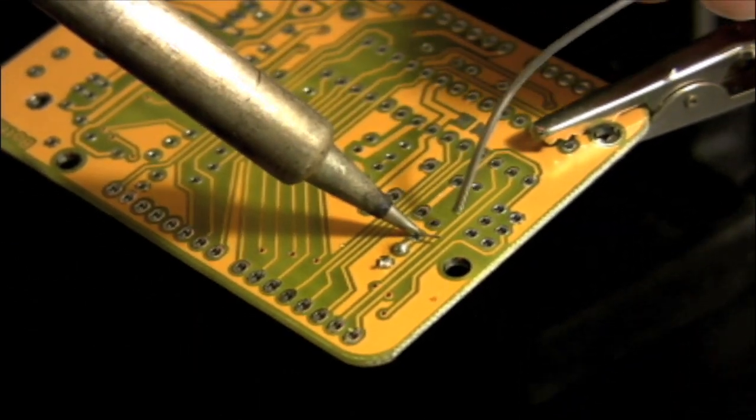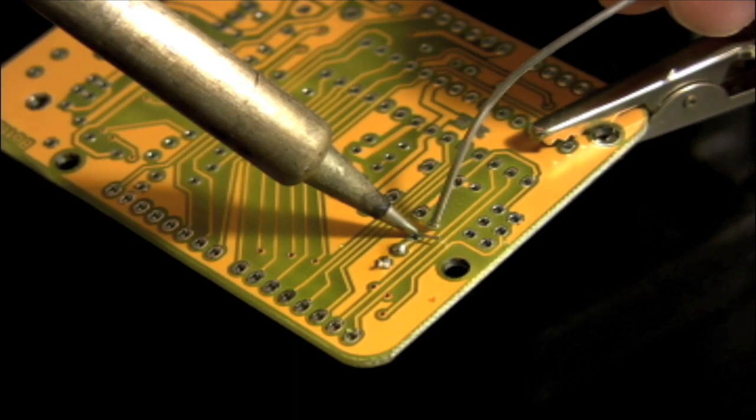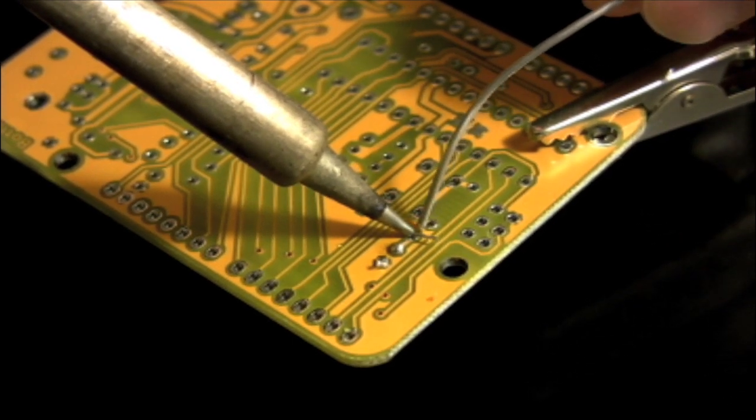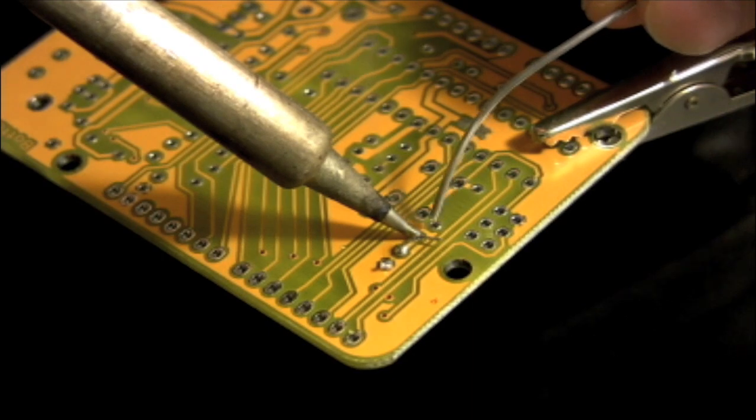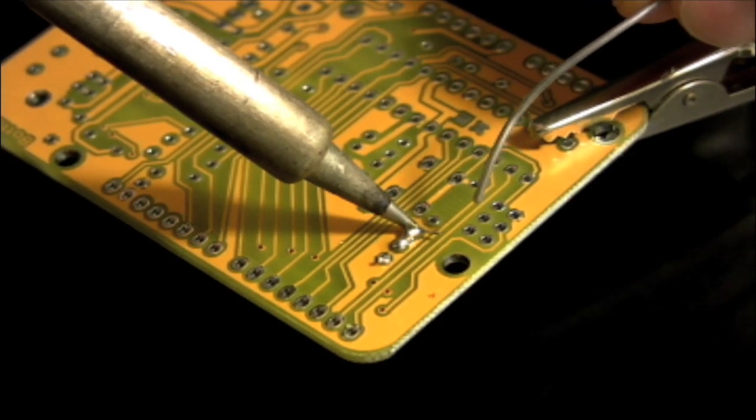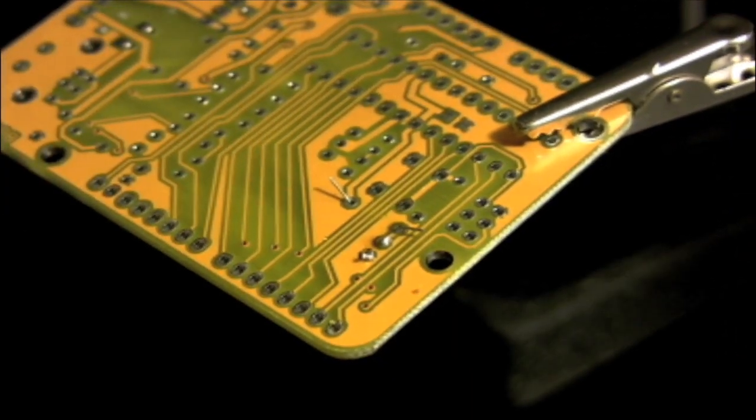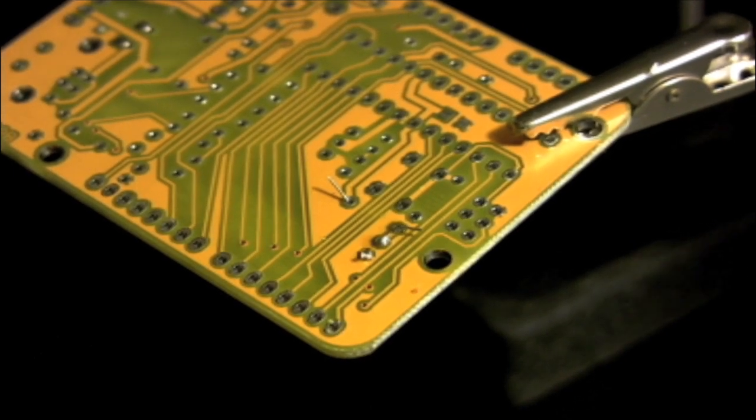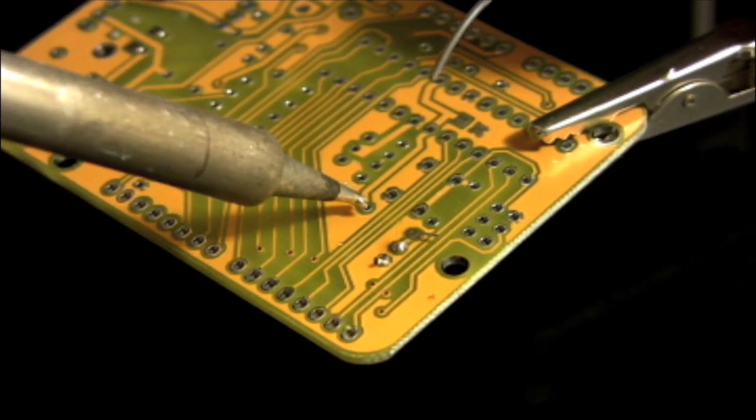Again, I touch both the pad and the leg, and I bring my solder in to fill the hole. Do the same thing with the other side. Again, making sure to heat both the pad and the leg, and then bring the solder in to make the connection.